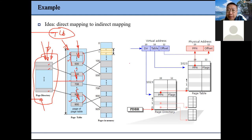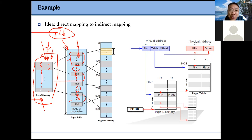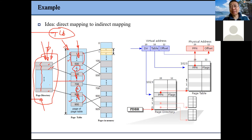On the other hand, if our page table needs every entry and we need to allocate one physical page for each, our page directory actually introduces only one page overhead. In reality, a lot of entries are empty so we don't need to allocate physical space for them. That's the benefit.